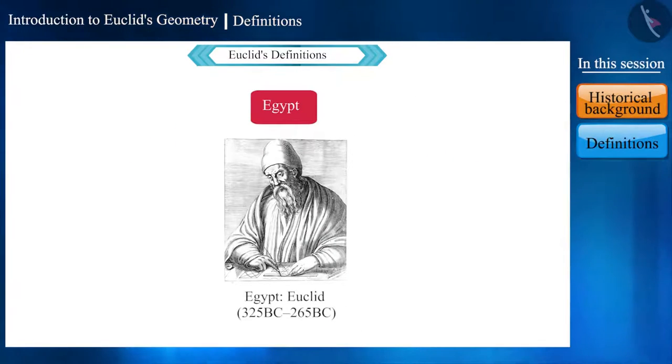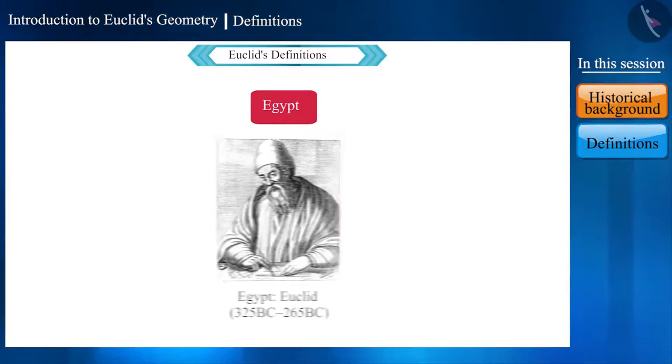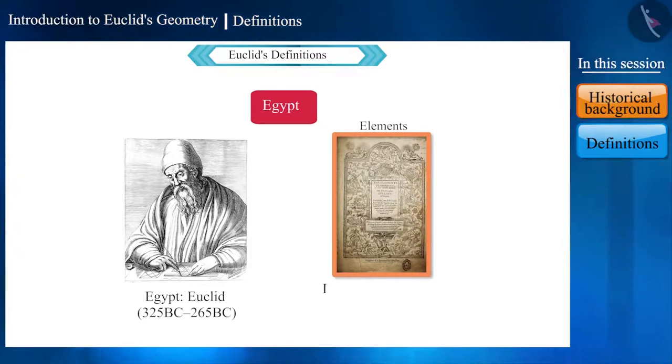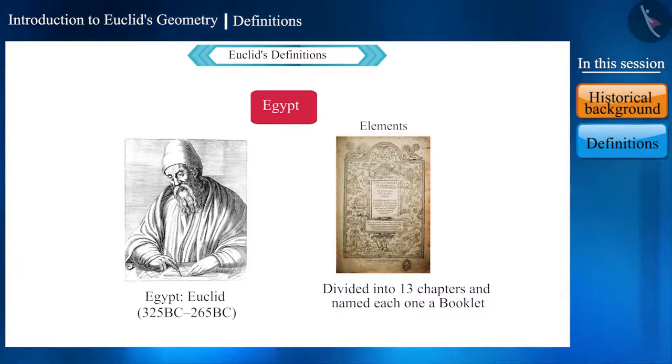Euclid, a teacher of mathematics at Alexandria in Egypt, arranged all these statements briefly as definitions in his book Elements, in which he collected all the knowledge of mathematics known up to that time. He divided that book into 13 chapters and named each one a booklet.